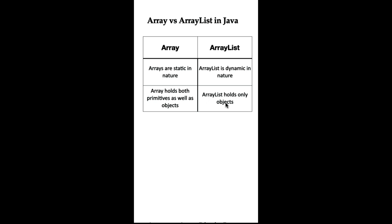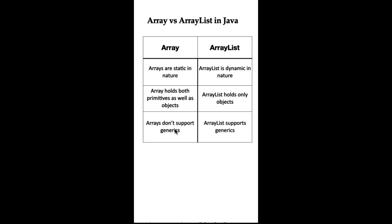can only contain object elements. It cannot hold primitive types directly, but we can use wrapper classes to store primitive types in ArrayList. Next, arrays do not support generics, whereas ArrayList supports generics.